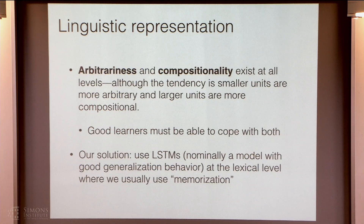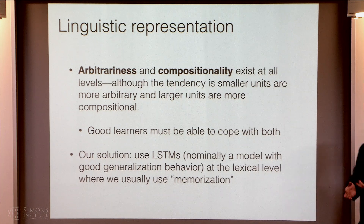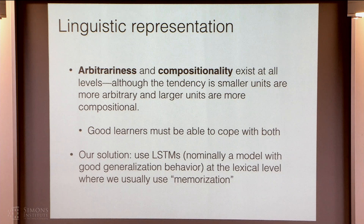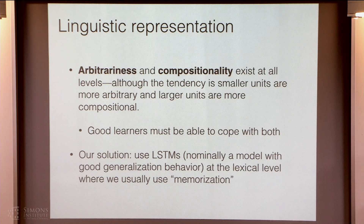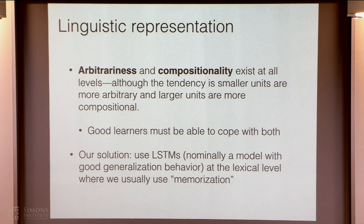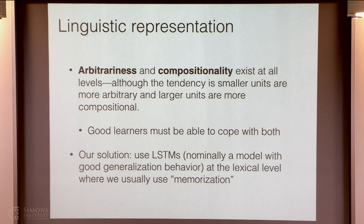When learning linguistic representations, these are the two extremes a learner has to contend with. Although we do see more arbitrariness at the level of individual words, we really do see a gradation — we see arbitrariness at the level of sentences and compositionality at the level of words. We need learners that can be flexible and move between these two extremes. In general, what we've been doing is taking LSTMs, which are nominally a model that reads in multiple things and puts them together, and forcing them to also memorize. What do you mean at the lexical level meaning? I'll talk about one of the uses in just a second.